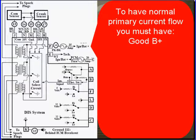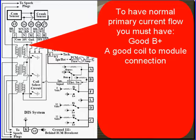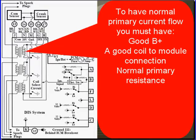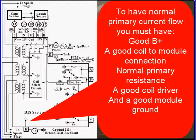To have normal primary current flow, you must have good B+, a good coil to module connection, a normal primary resistance, a good driver, and a good module ground.